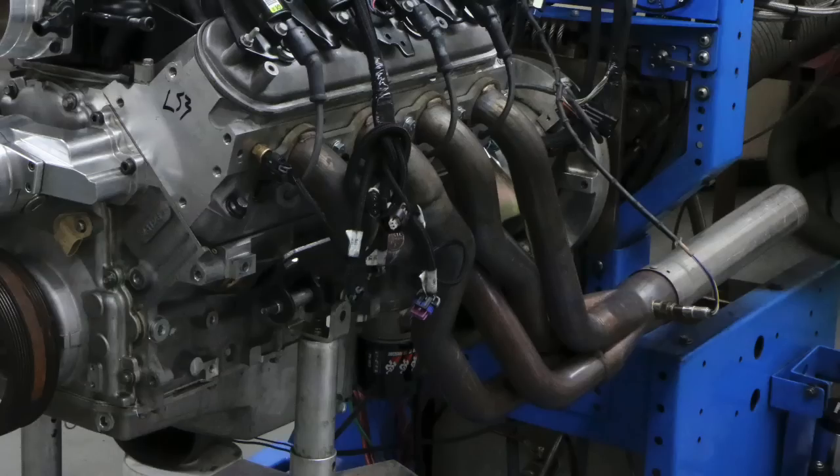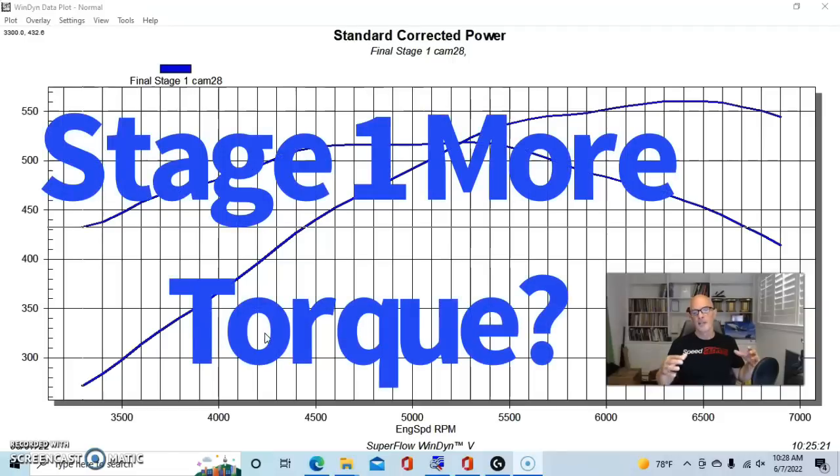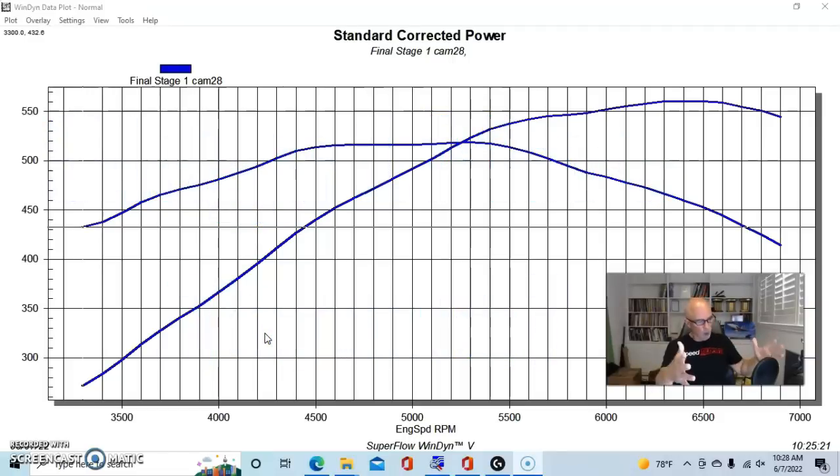We ran it with a factory LS3 intake manifold, long tube headers, kind of the way that you would run it in the vehicle. The important thing here is that a lot of times when guys are deciding on camshafts, they think, okay, I don't need all the big top end charge because I'm not going to be revving my motor out to 7,000 RPM. I don't need the big stage three cam. I'm going to get the smaller cam because that's going to give me a lot more torque.